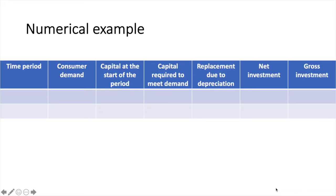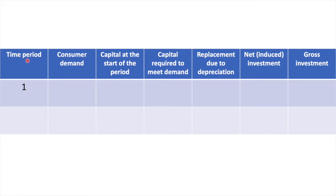Let's look at the accelerator effect using a numerical example. I've constructed a simple table using some of the concepts we've just learned. We'll consider a firm's behavior over two years and look at consumer demand, how much capital they started with, how much capital the firm needs to produce the given consumer demand, how many machines they need to replace each year, how many new machines they need to buy (net or induced investment), and finally gross investment, which is the total of all spending on replacement capital and new capital.